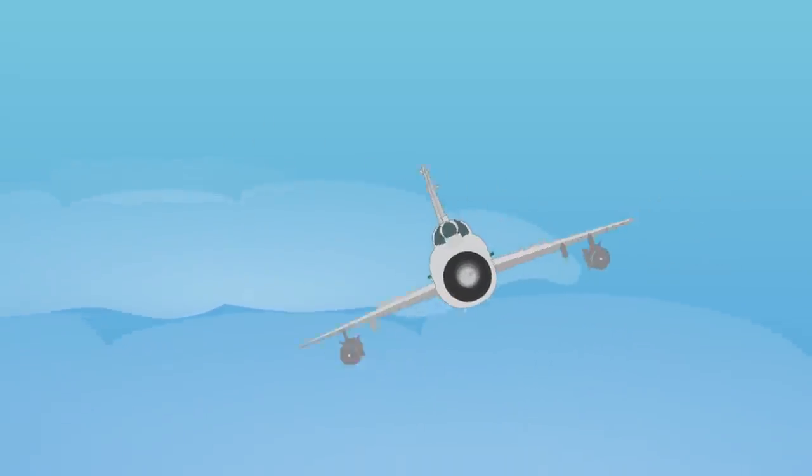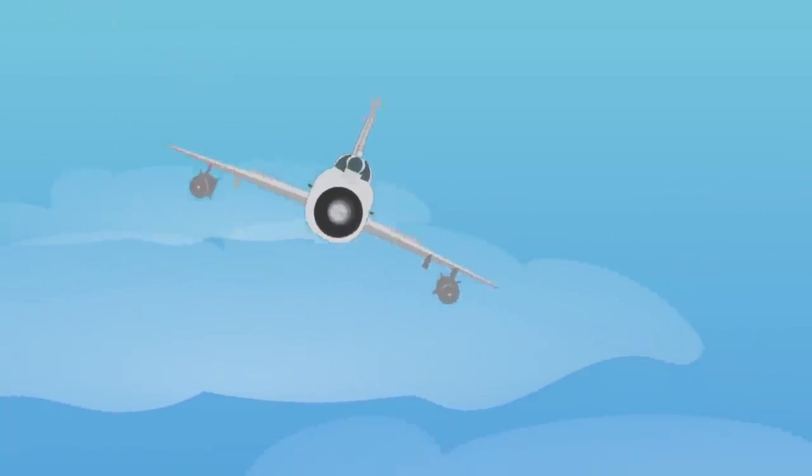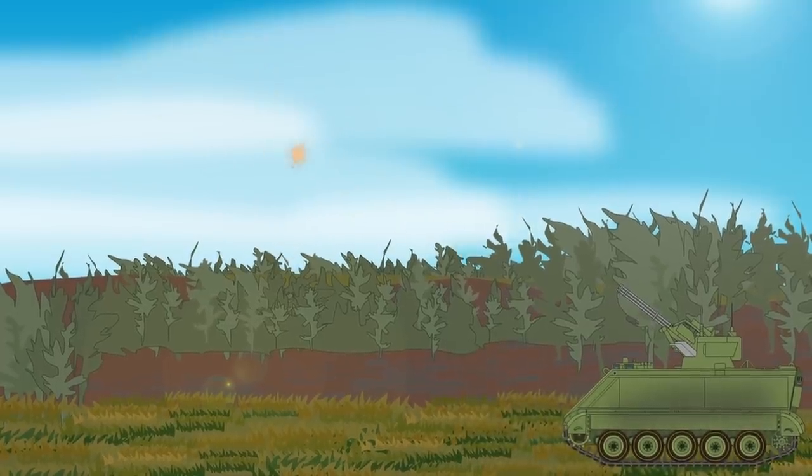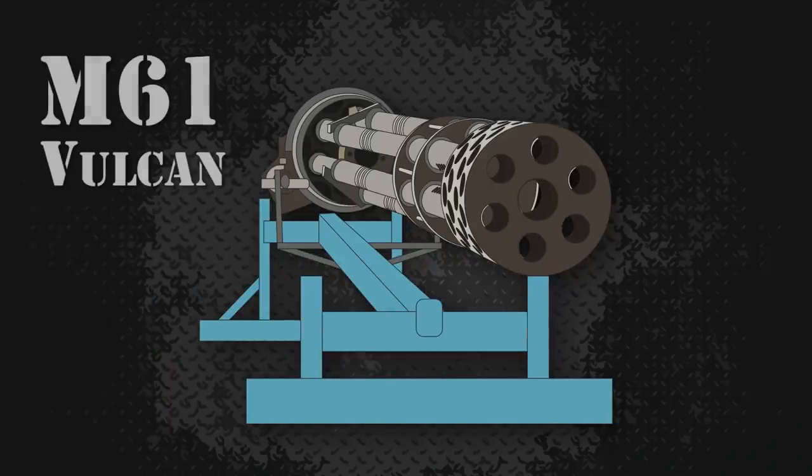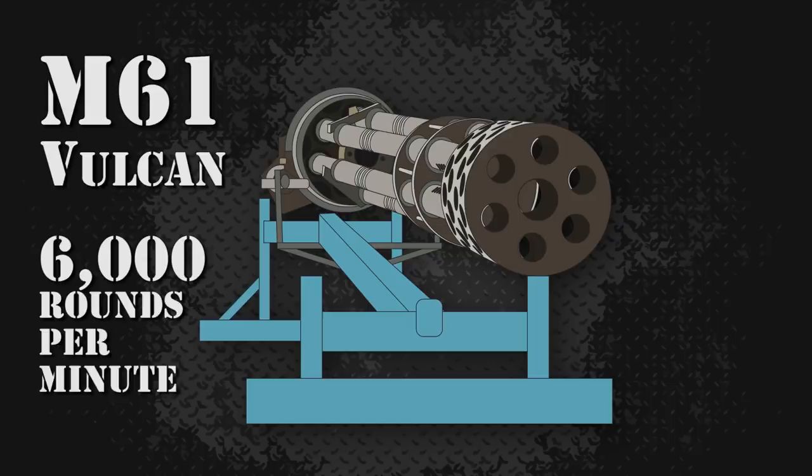This last feature was essential considering the speed of the jet aircraft they were supposed to shoot down. The project led by the General Dynamics Corporation resulted in the six-barreled 20mm M61 Vulcan rotary cannon, with its rate of fire of up to 6,000 rounds per minute.